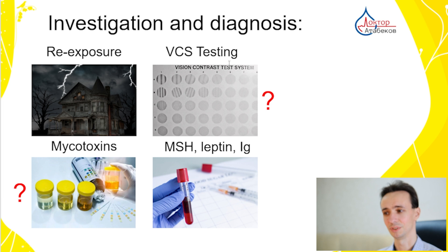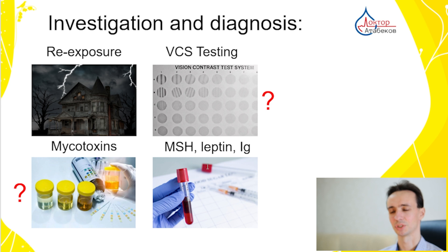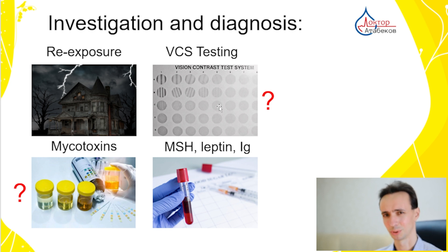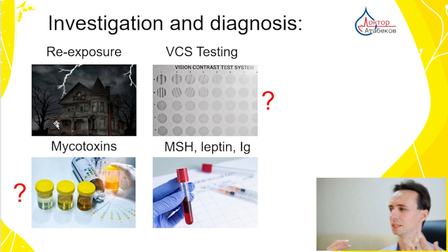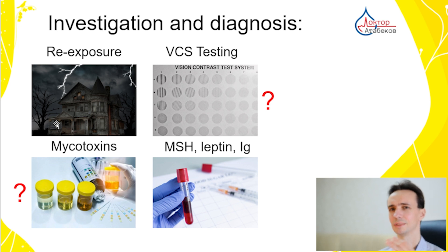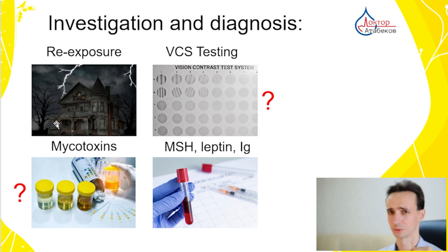There are other tests: visual contrast scale (VCS), MSH, leptin, and antibody tests, which we'll discuss shortly. I read many different articles and algorithms from different countries — official sources and PubMed articles — and there is no single consensus, no single perfect diagnostic method, and no single perfect treatment. But let's discuss what we have.